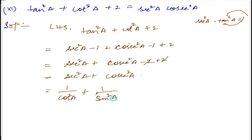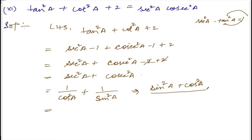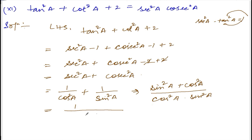Now cross multiply. If you cross multiply, you get sine square a plus cos square a divided by cos square a into sine square a. The numerator sin square a plus cos square a equals 1, divided by cos square a into sine square a.